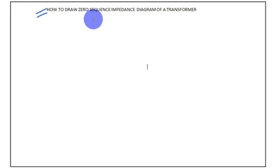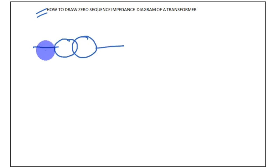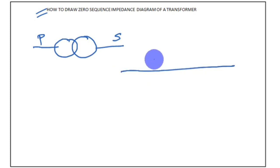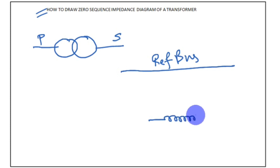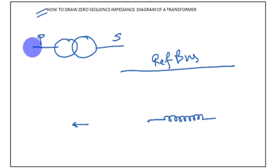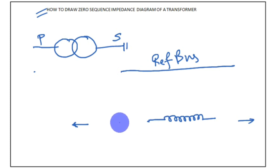This is a single line diagram representation of a transformer. This is the primary winding, marked as C, and this is the secondary winding, marked as S. Whenever we are drawing the zero sequence diagram, there will be a reference bar. Here we draw the transformer zero sequence impedance. All components connected on the primary side are from equipment connected at the primary end, and all on the other side are from the secondary side of the transformer.